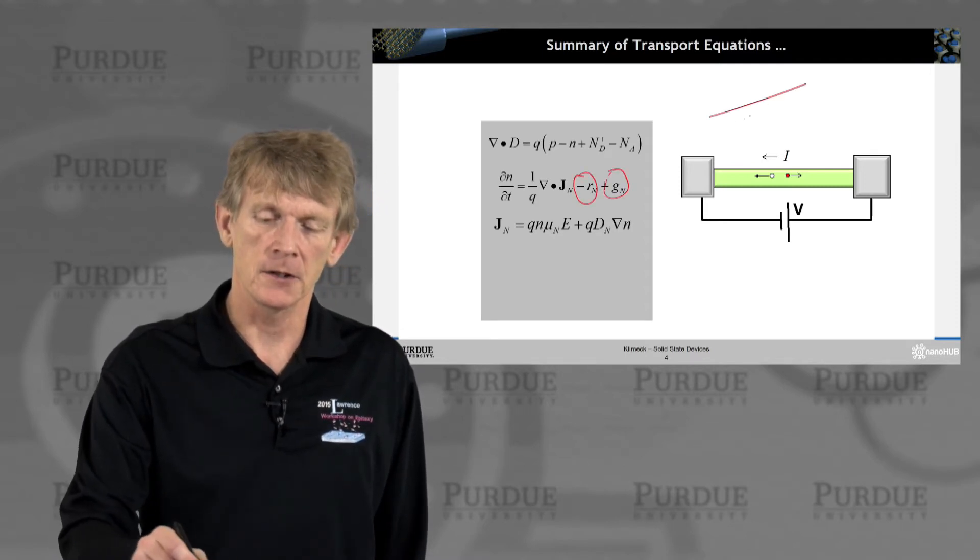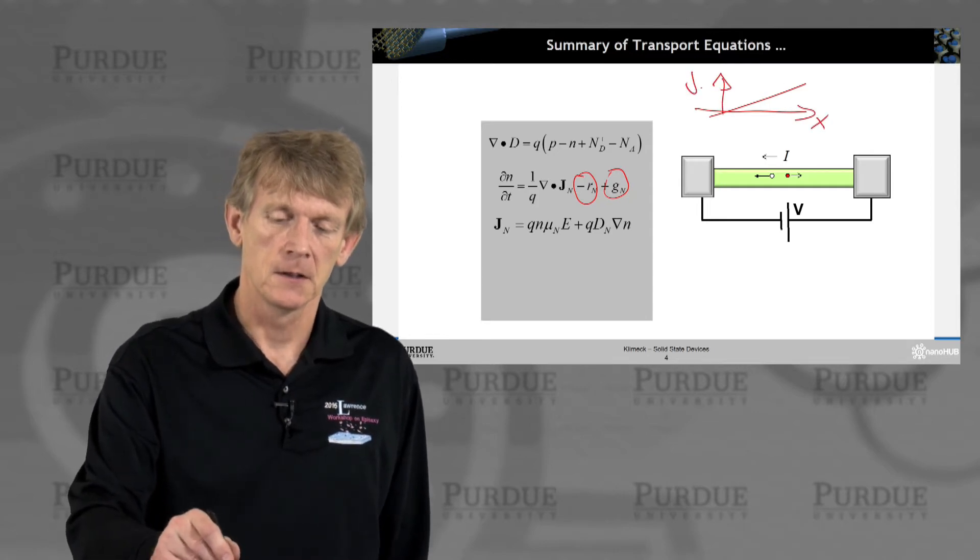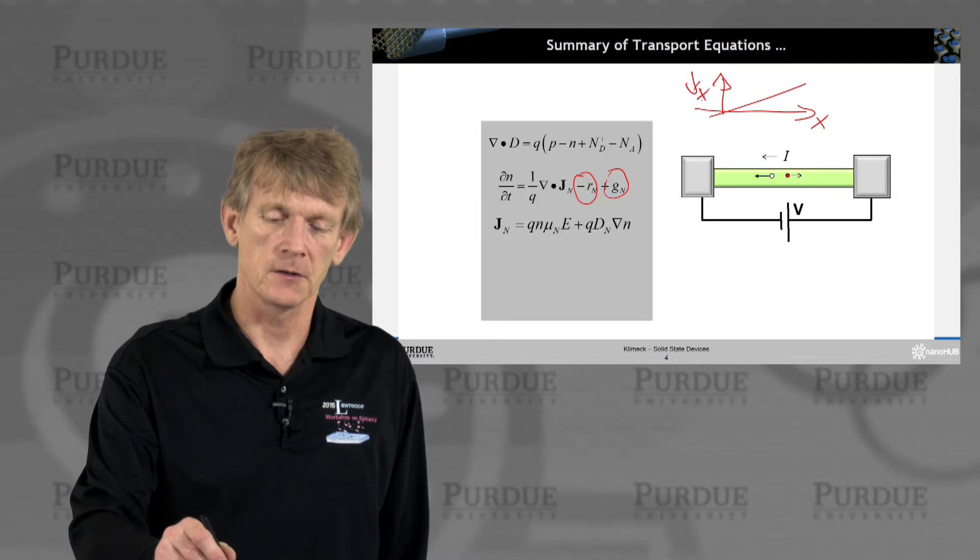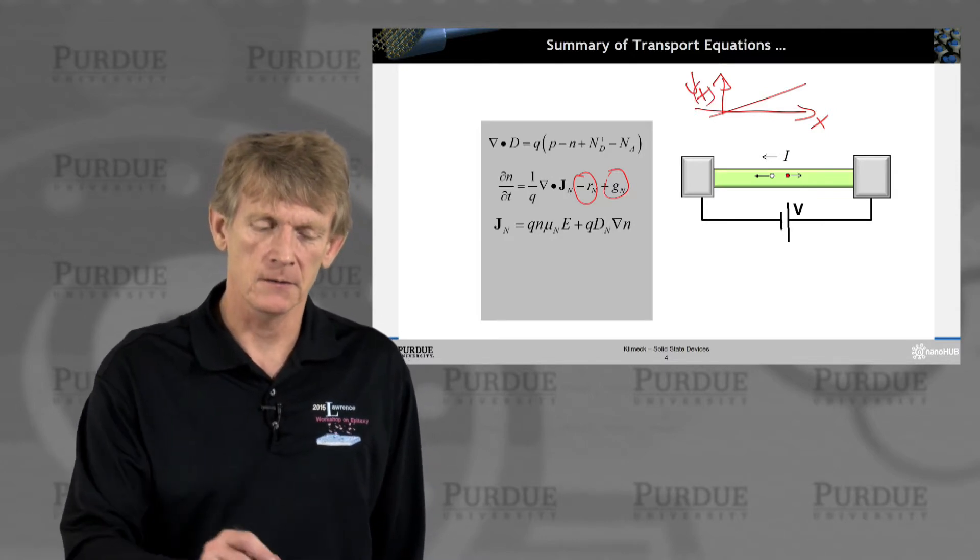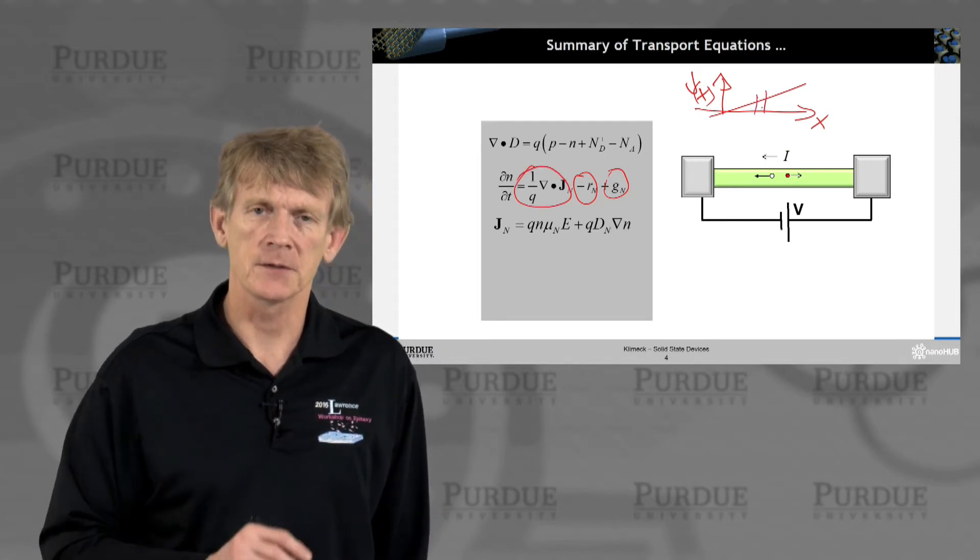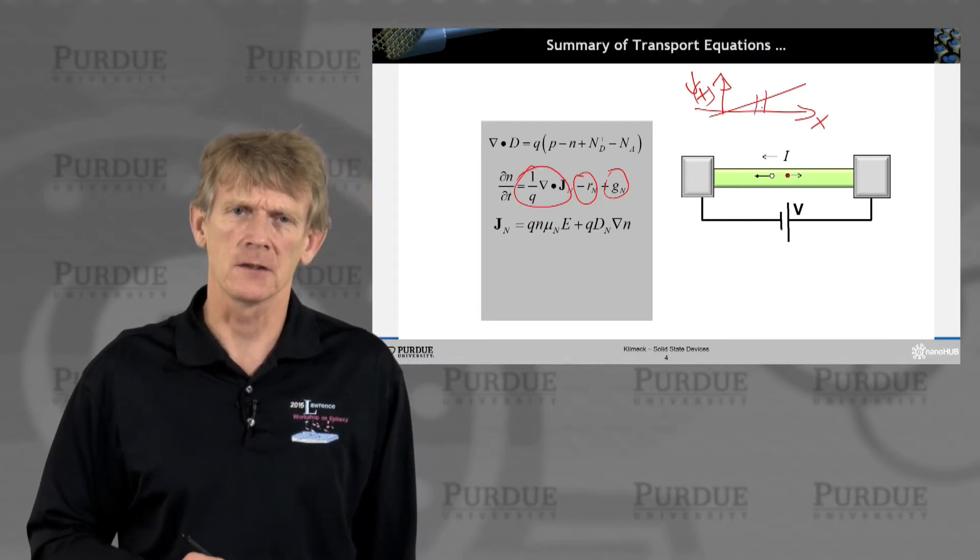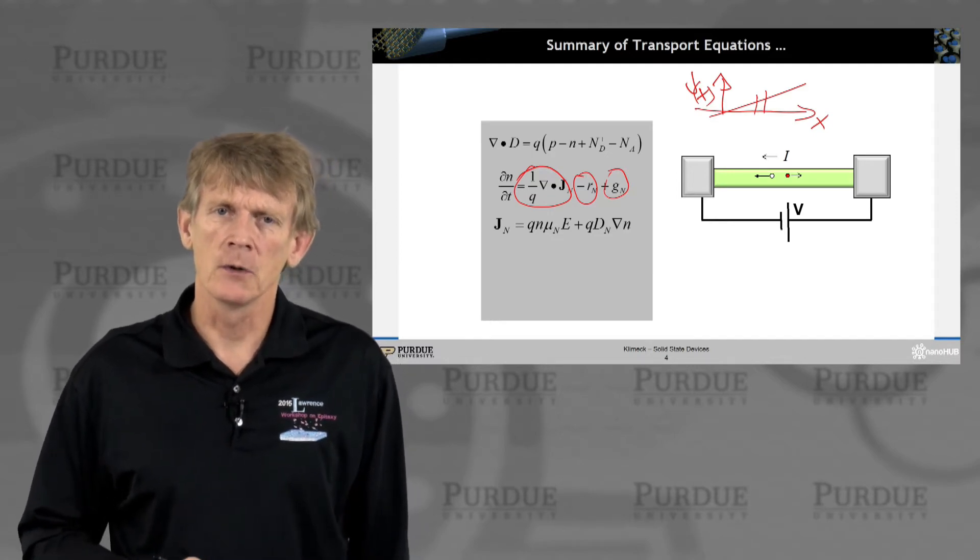And if the current changes in space, x, and this is j of x, as a function of x, if the current changes spatially, that's this term here, that means there must be a change in electron density as well. That's a continuity equation, if you will.